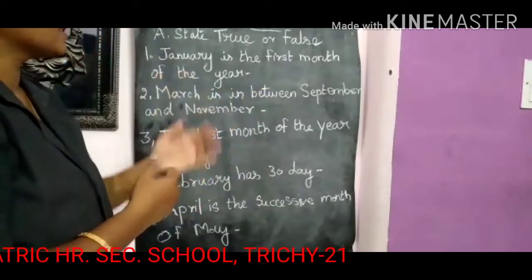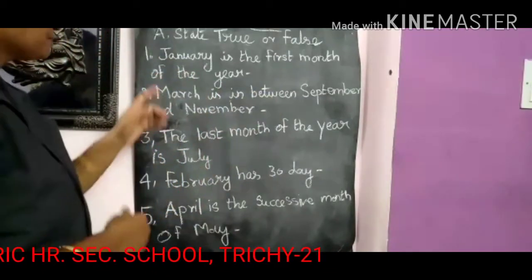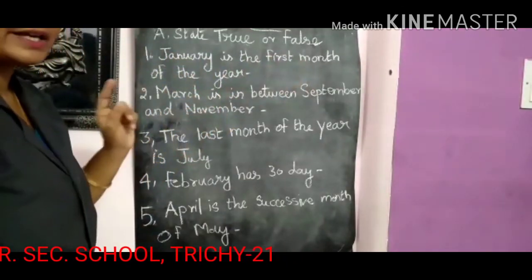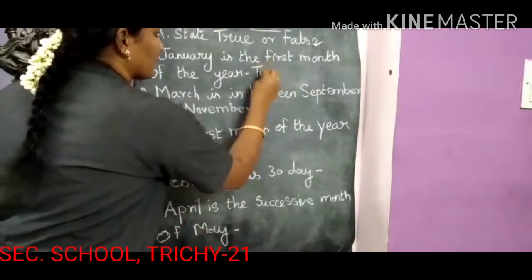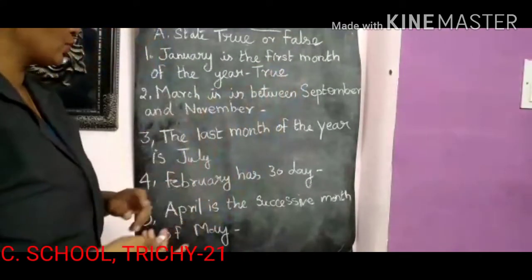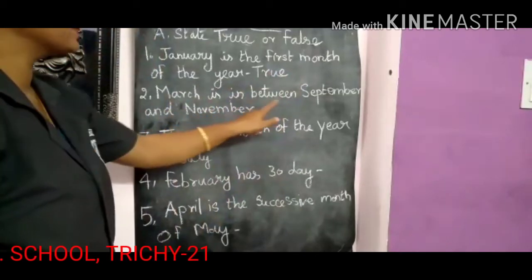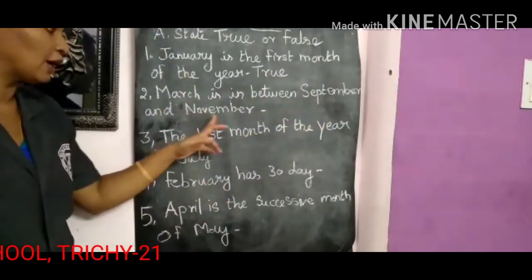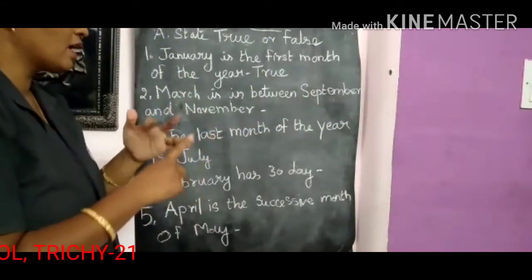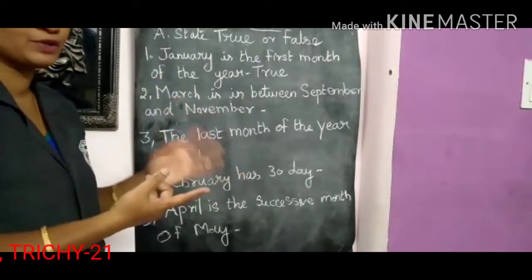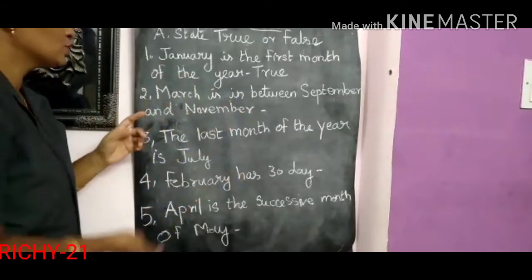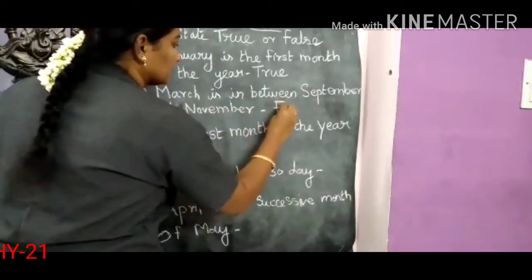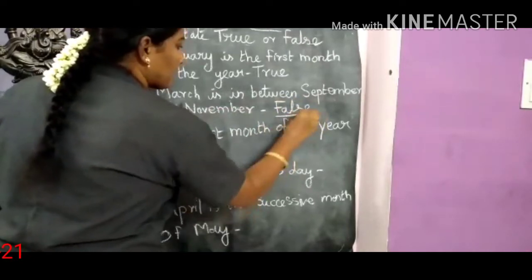Now let's see the sentences — true or false. First question: January is the first month of the year. Yes, January is the first month of the year, so write TRUE. Second question: March is between September and November. No — between September and November comes October, so this sentence is FALSE.